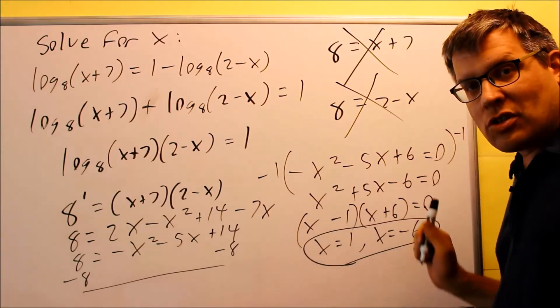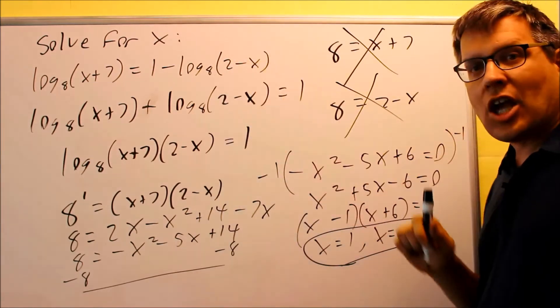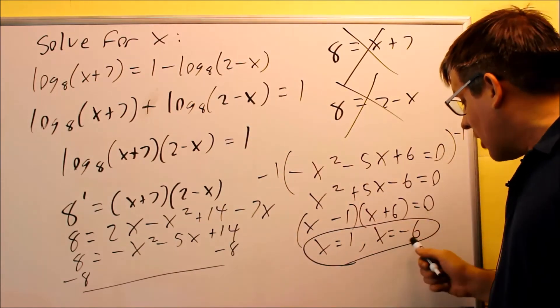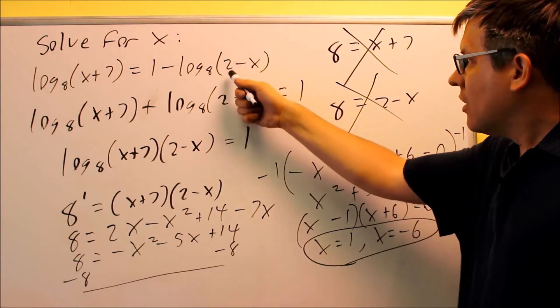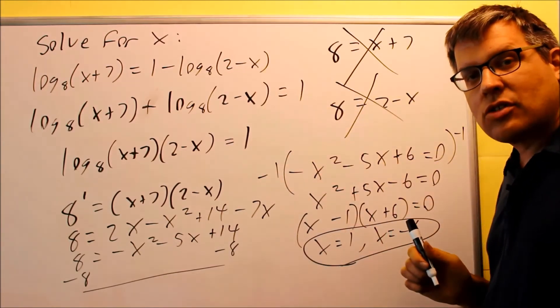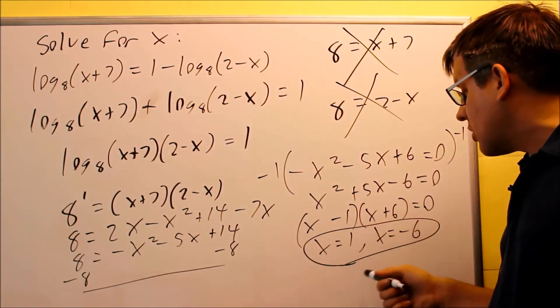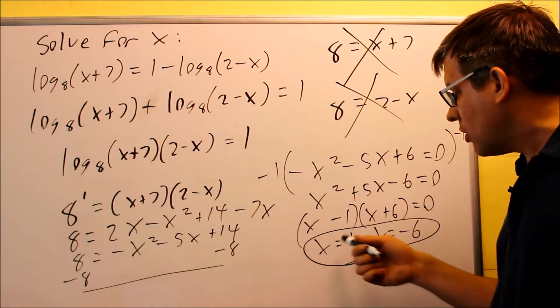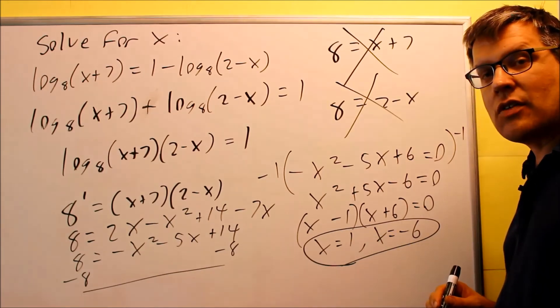The answer itself can be negative, it's just that that number inside of here, that can't make that negative. So even though I have a negative 6 here, if I put that inside, 2 minus a negative 6 actually gives you a positive result. That's why this one works. So you do have two answers on this one, x is 1 and x is negative 6.